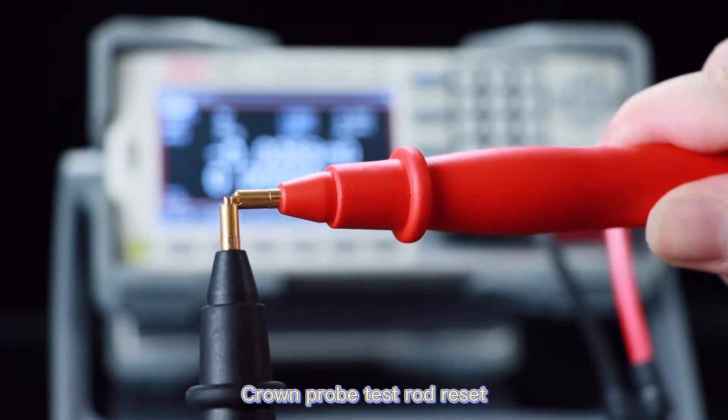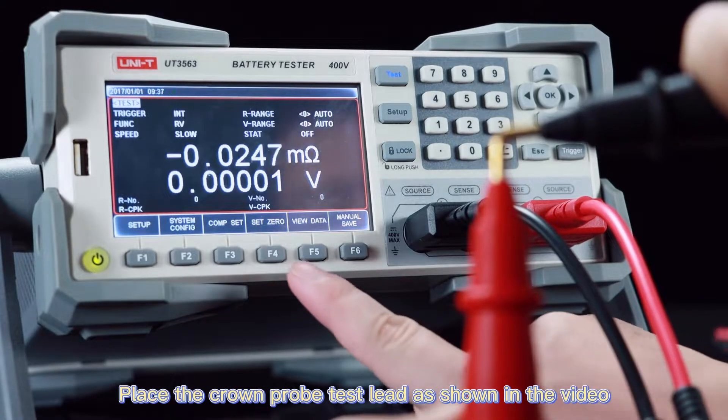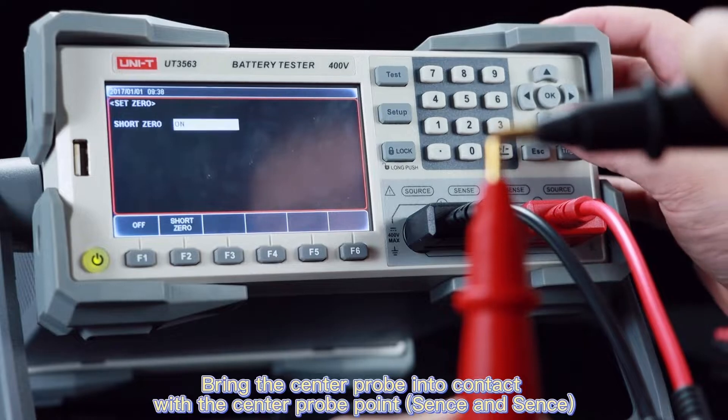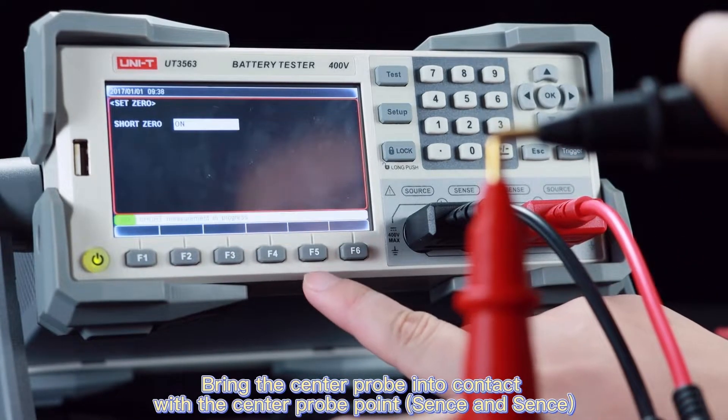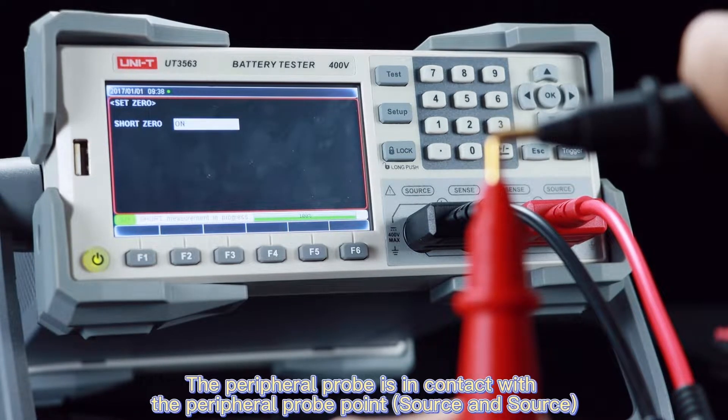Chrome crop test rod reset. Place the chrome crop test rod as shown in the video. Bring the center probe into contact with the center probe point sense and sense. The peripheral probe is in contact with the peripheral probe point source and source.